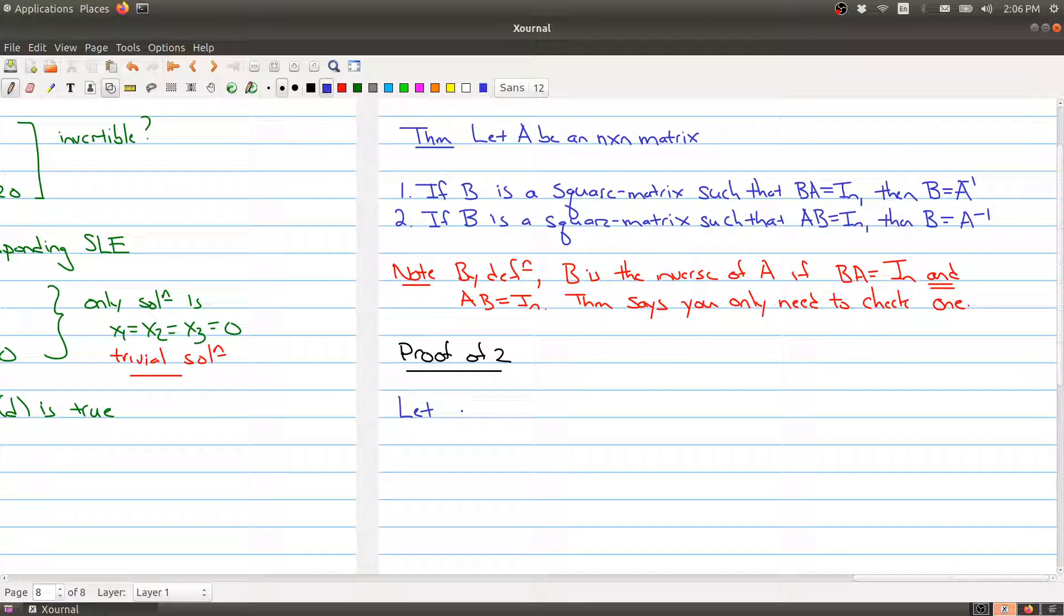We're going to let x naught be any solution to B times x naught equals zero. So x naught is any solution to the homogeneous system. Well then, x naught is the same thing as I times the identity times x naught, which is the same thing as AB times x naught, which is equal to A times Bx naught, which is equal to A times 0, which is equal to 0. So this solution has to be equal to 0.